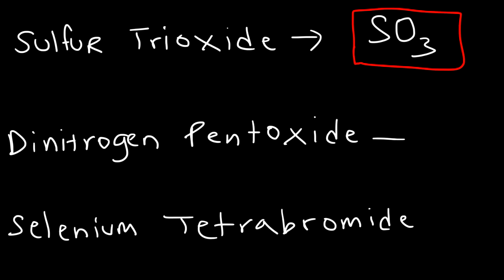Dinitrogen pentoxide. Di represents two, so we have two nitrogens. Penta is associated with five, so there's five oxygens. Therefore, the chemical formula is N2O5.